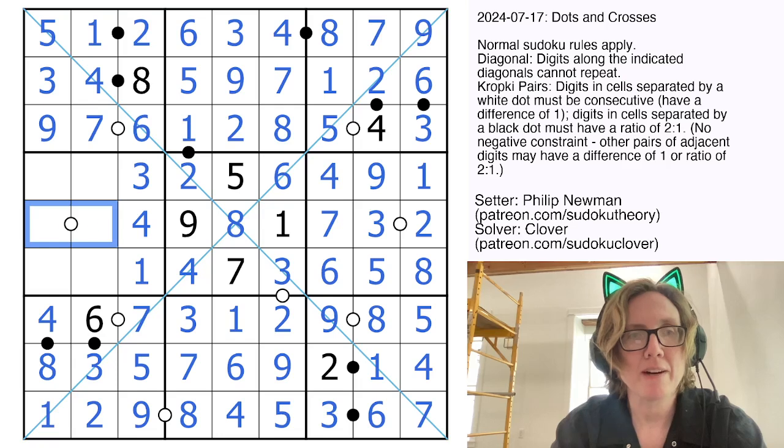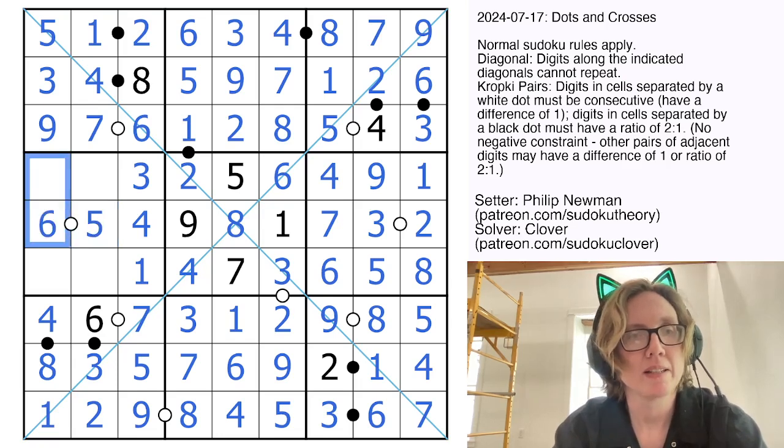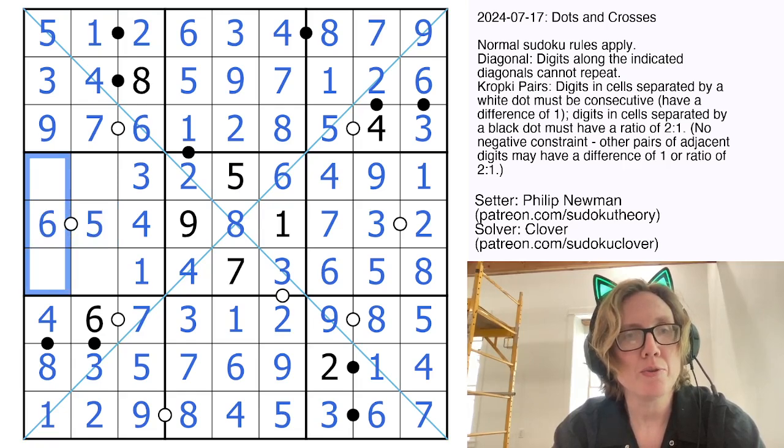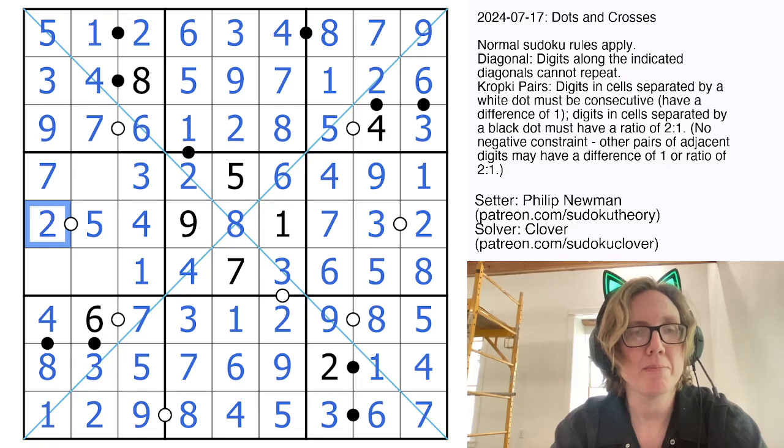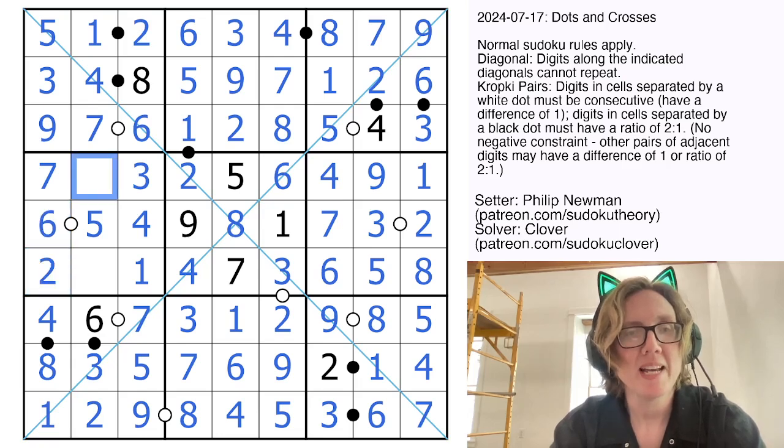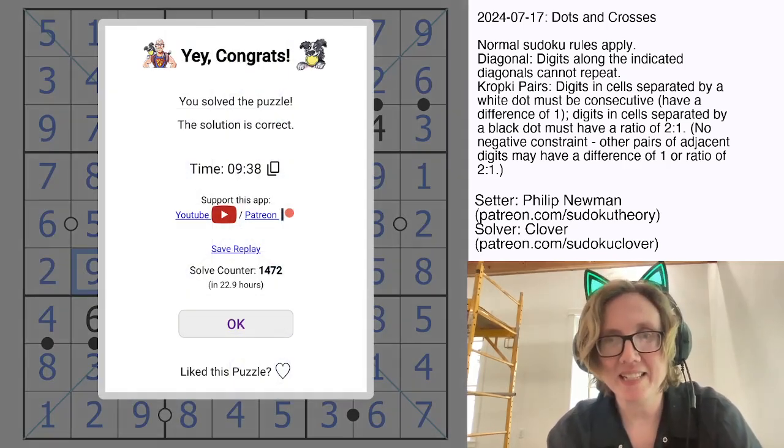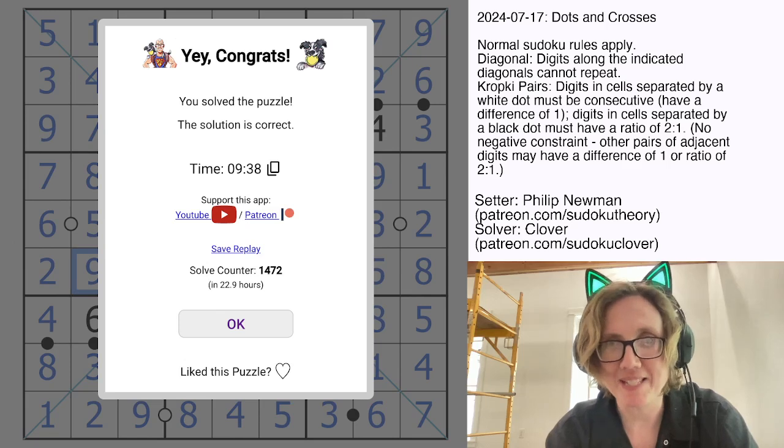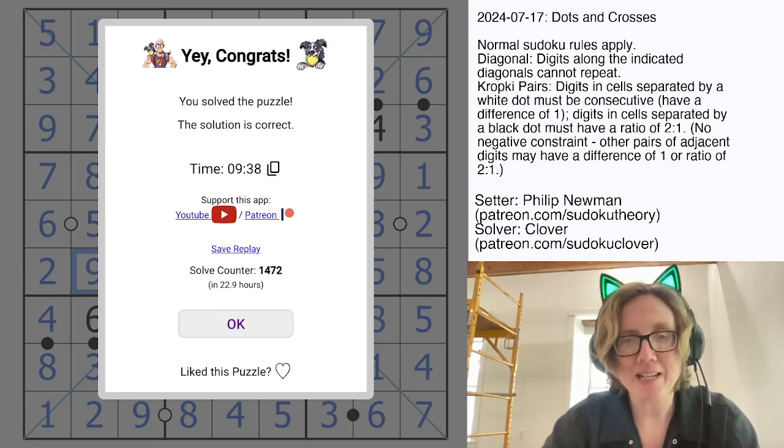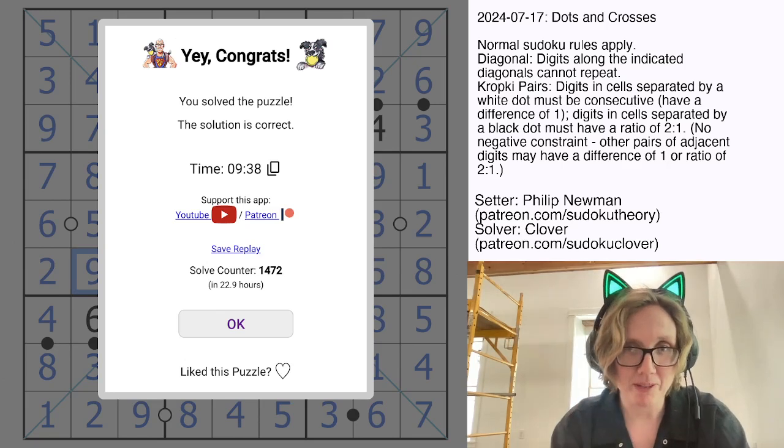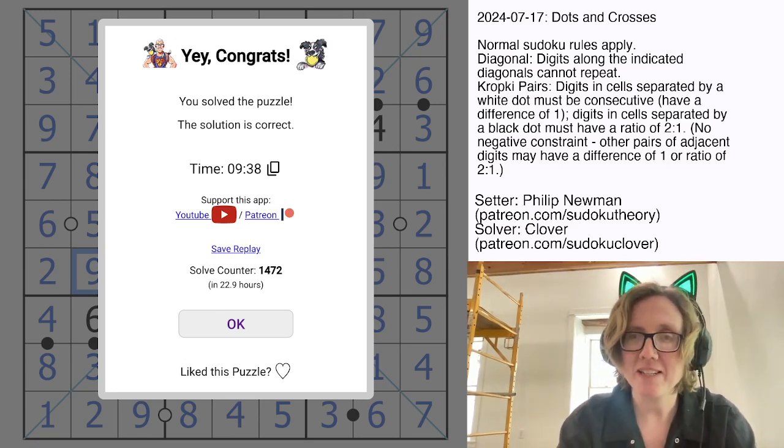And let's finish off, so these will be 5 and 6, these will be, to finish the column, 2 and 7. That's a 7, that's a 2, and we still need an 8 and a 9. And that's us done, that's how you solve Philip Newman's Dots and Crosses. Hope you enjoyed that one. Solve it yourself with the link in the description below this video, and I will catch you next time.